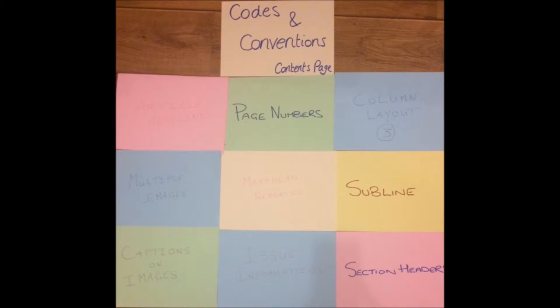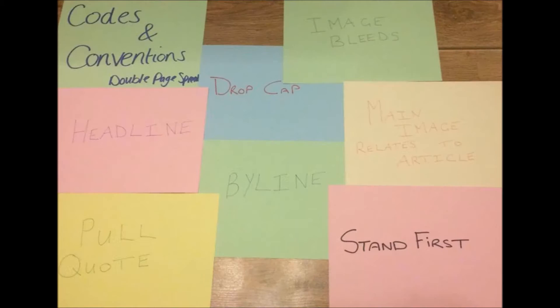At the start we first looked at the preliminary. The only things we mostly knew were the codes and conventions and where they should be on the magazine. After the preliminary we learned more in depth about the specific codes and conventions that had to be put onto my media products for it to be conventional and visually striking to attract the target audience. By researching about the codes and conventions it allows my final music magazine product to be a lot better than the preliminary task.